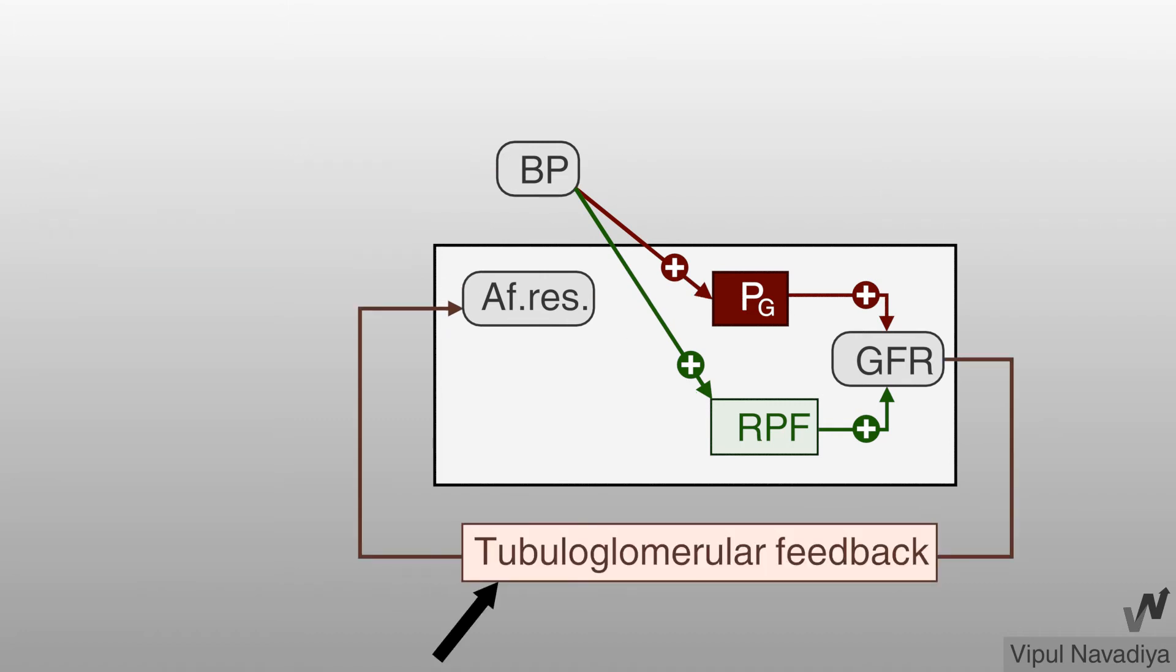So now let's move towards tubuloglomerular feedback. Here, changing blood pressure initially produces changes in GFR. Then these changes in GFR produce changes in afferent arteriolar resistance that counteracts initial change as feedback mechanism. Let's see the mechanism behind it.